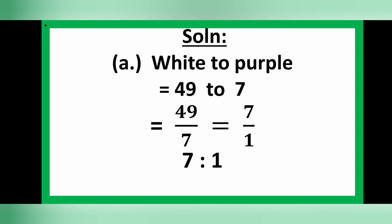The first part is to find the ratio of white to purple. There are 49 persons wearing white shirts and 7 persons wearing purple shirts, so the ratio is 49 to 7. Written as a fraction: 49 over 7. Dividing both by 7 gives 7 over 1, so the ratio of white to purple is 7 to 1.